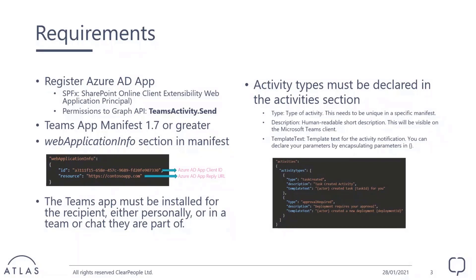For each activity type, you need to specify the type — which is just a unique name in the manifest — a short description, and then the important part, which is the template text. This is the template you're going to use later when sending the notification, and you can specify tokens. Later when sending the notification, you pass the real values that you want to replace in the template. It's really important that the Teams application needs to be installed either in the team, the chat, or the user — otherwise you're going to get an exception.